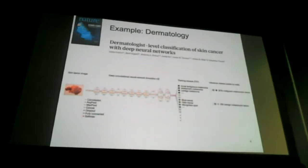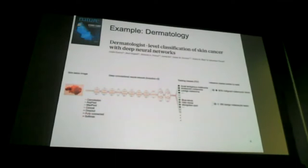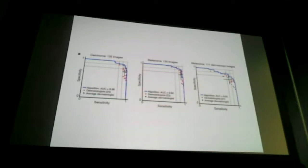First, some success stories in medical imaging where the black-box paradigm was used with surprising success. A 2017 Stanford study collected a large dataset of skin lesions with labels and trained a neural net. The results for melanoma detection were on par with or better than dermatologists themselves. You see many such stories now, where on a very specific, well-defined domain with a large dataset, a machine can do better than a human expert.